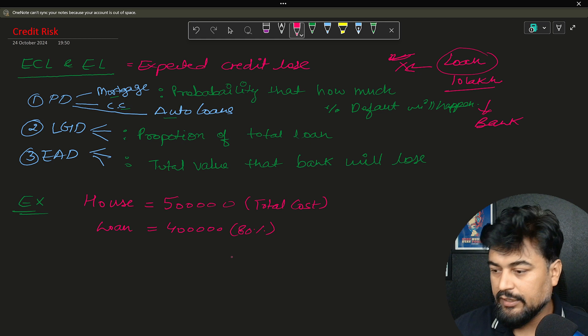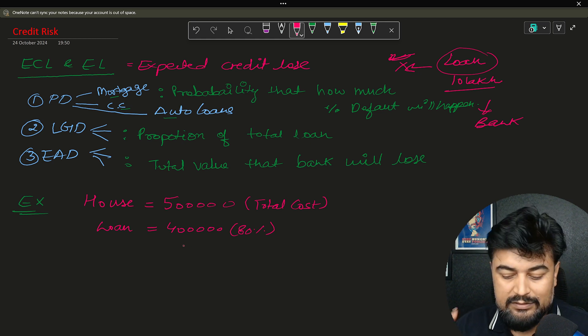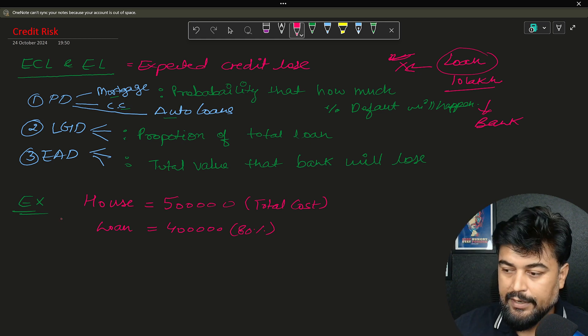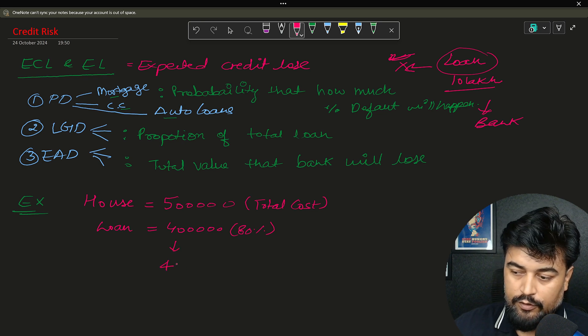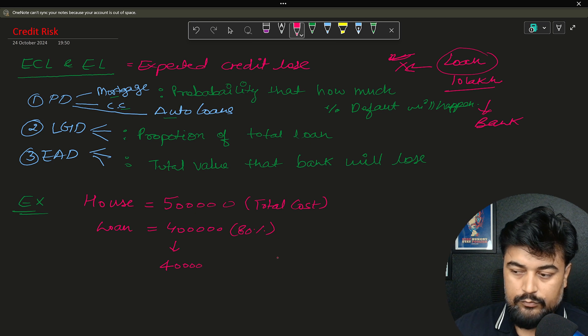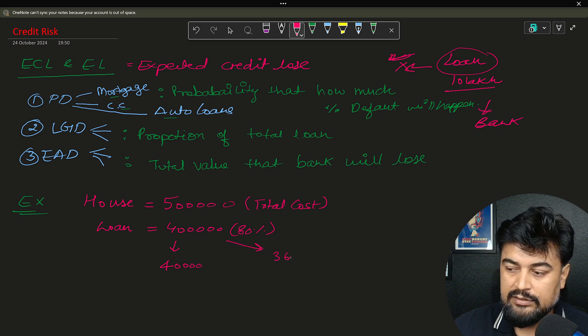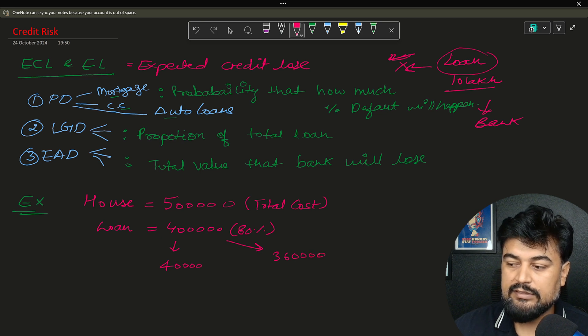Now if you see, if a person is paying the amount, let's say he paid 40,000 as of now. So the remaining amount is 3 lakh 60,000.